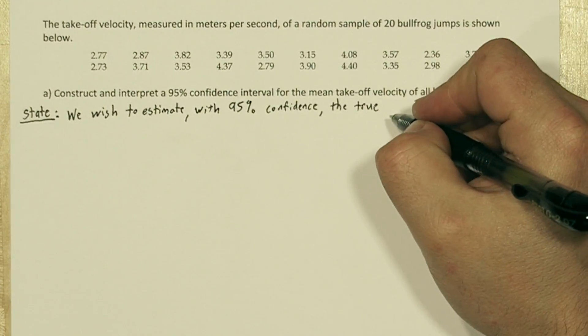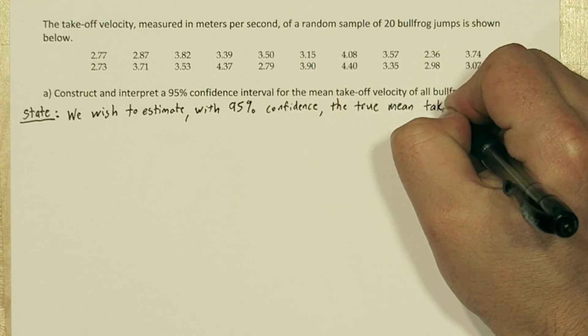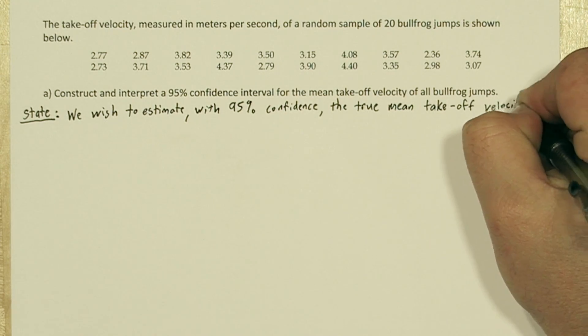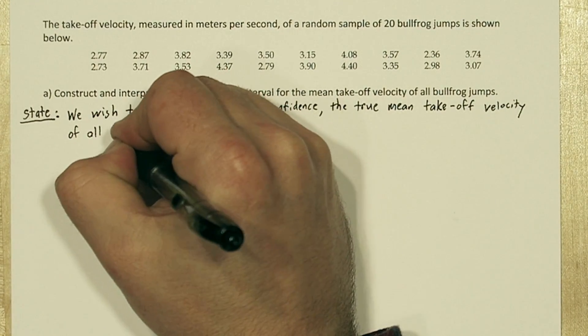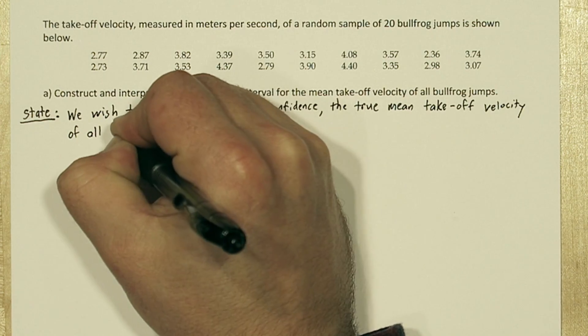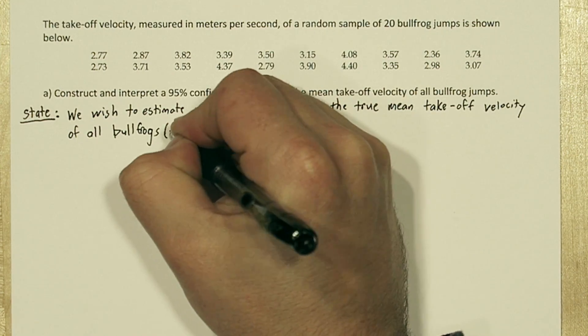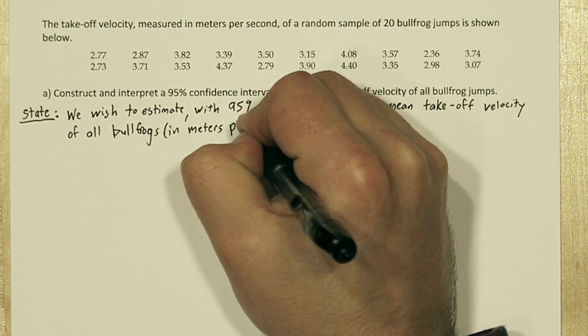For state, we want our confidence level and also the parameter we're trying to estimate. We wish to estimate with 95% confidence the true mean takeoff velocity of all bullfrogs in meters per second.